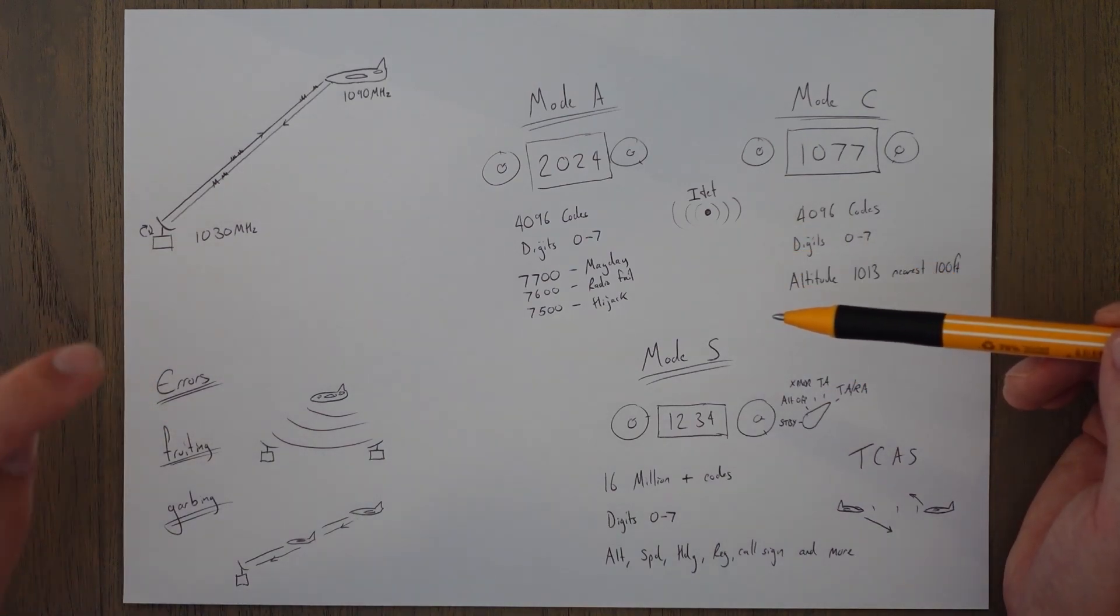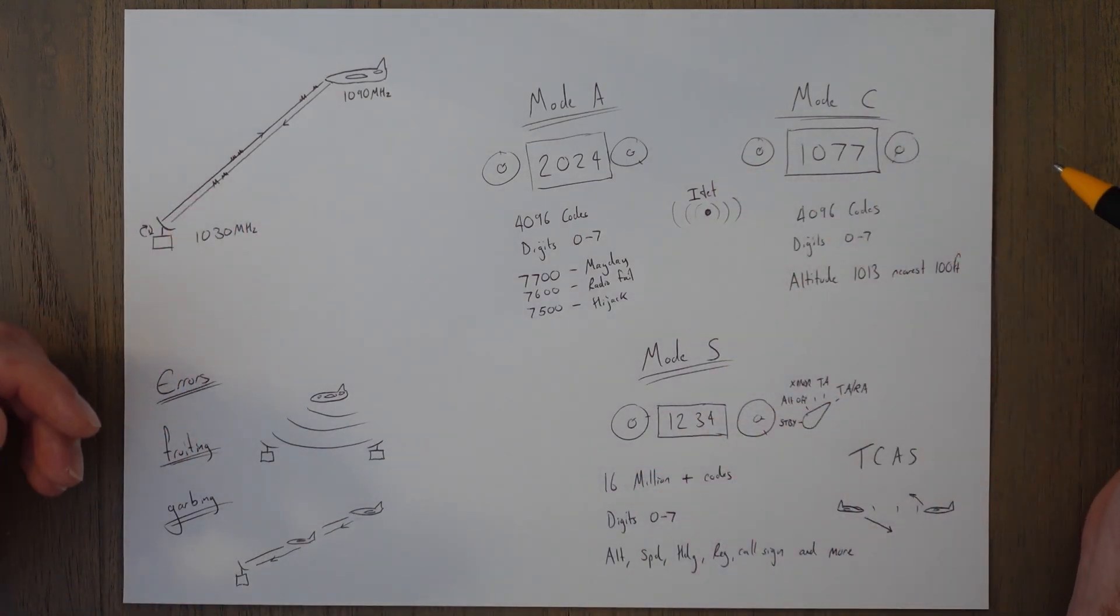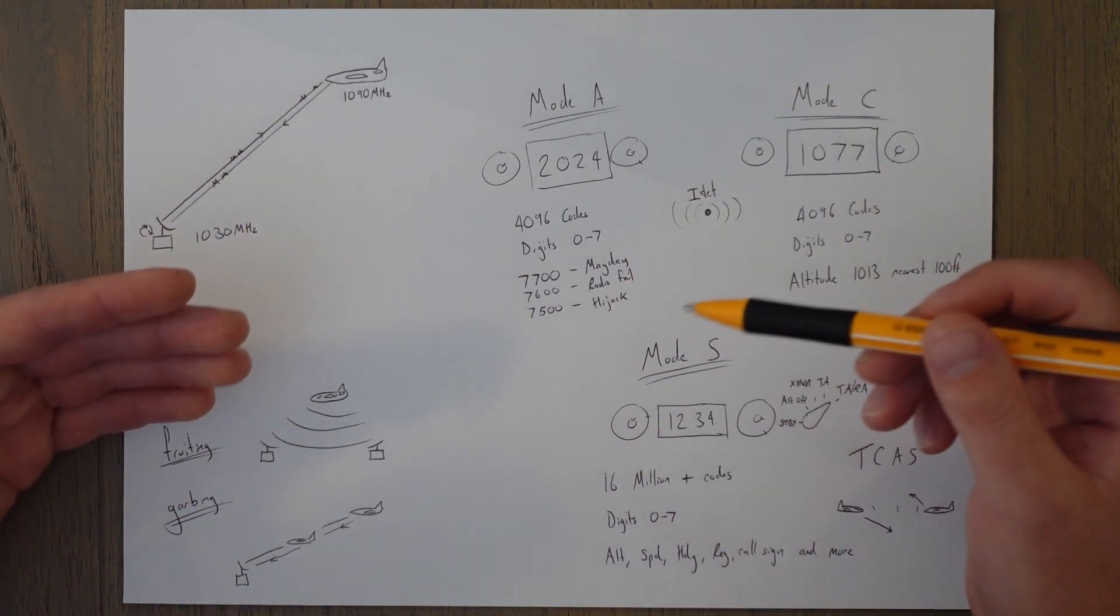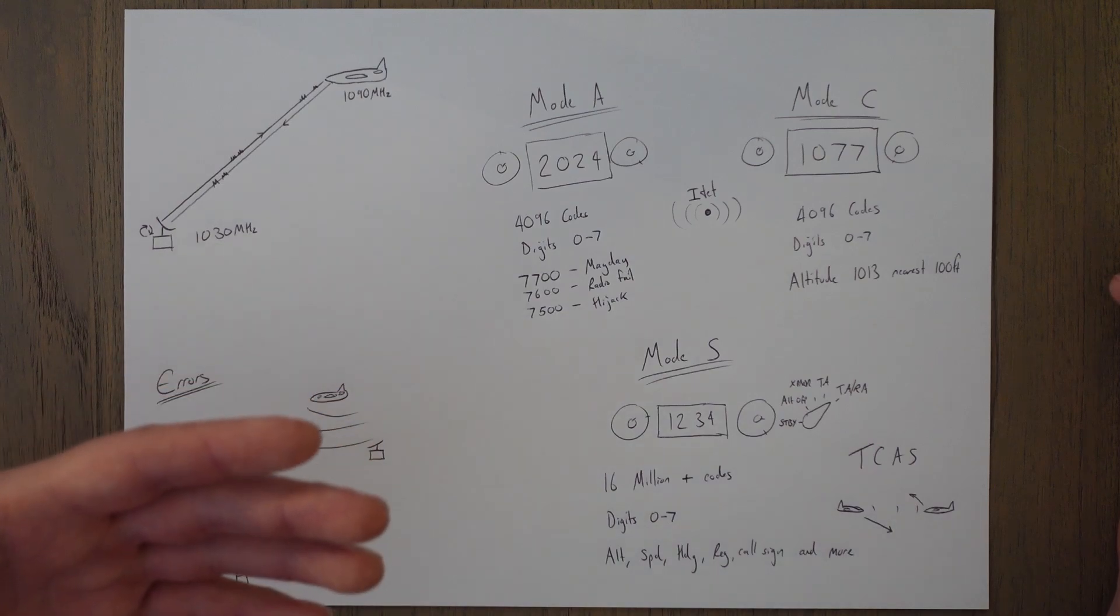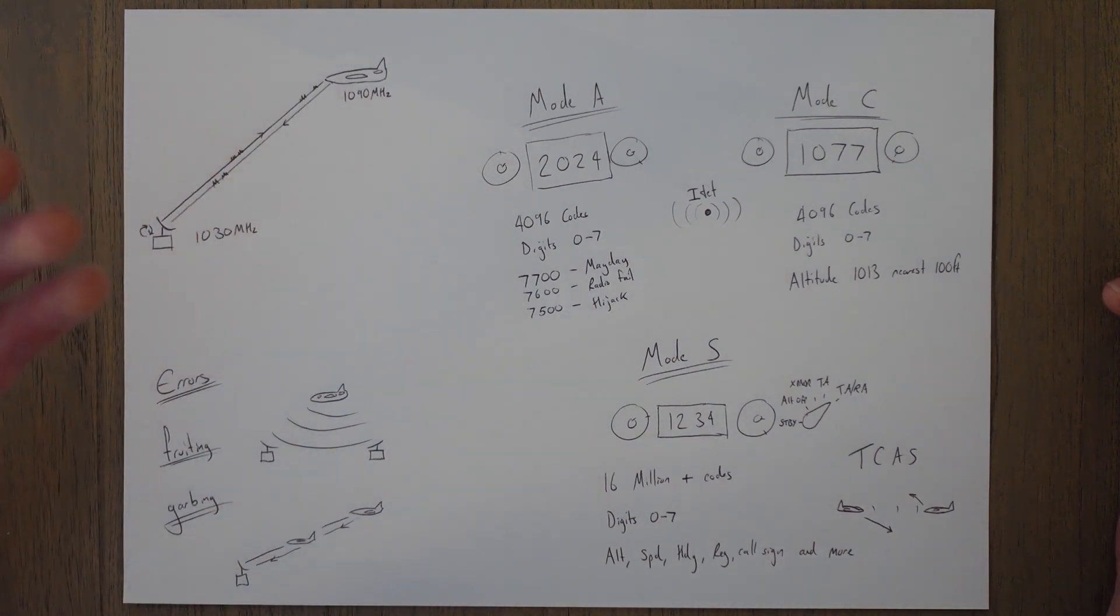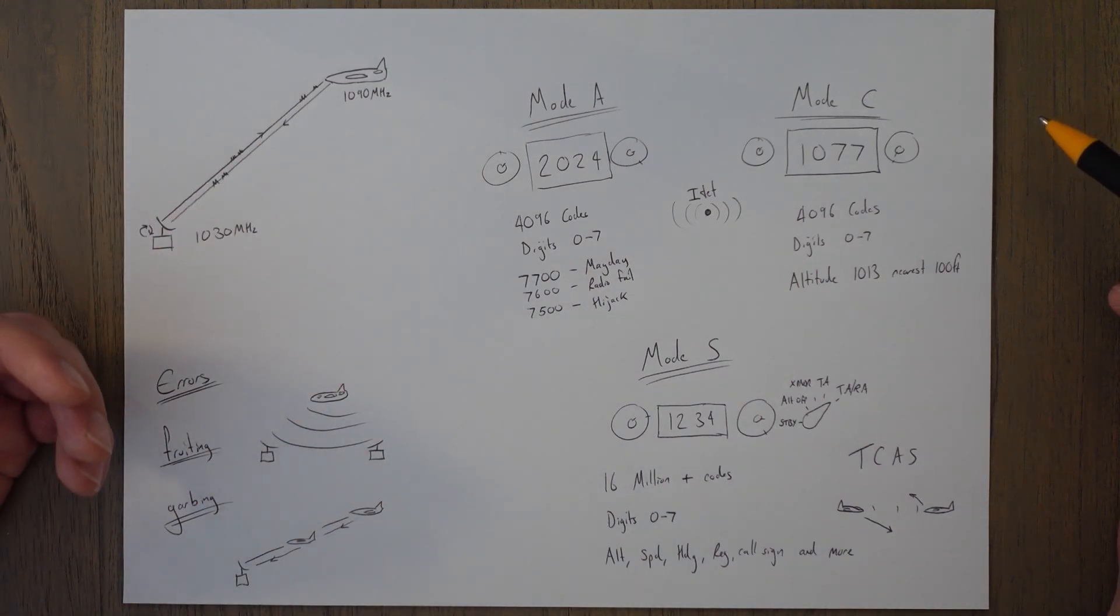And in all these transponders you get the function to ident, which is a little button that you push in the flight deck and it sends out a ping, a pulse to the radar controllers, so they can see easily who you are. Maybe if there's confusion over an aircraft that's just joined airspace or just taken off, they might say right, I'd like to know all the aircraft that have just taken off from this airport, so I'm going to ask every single one to ident just after takeoff.